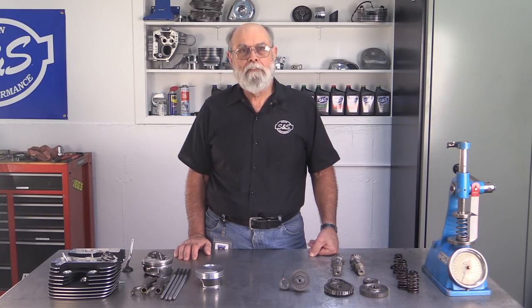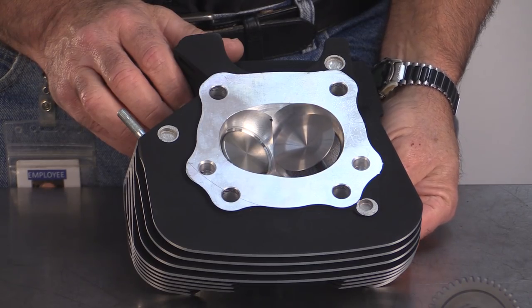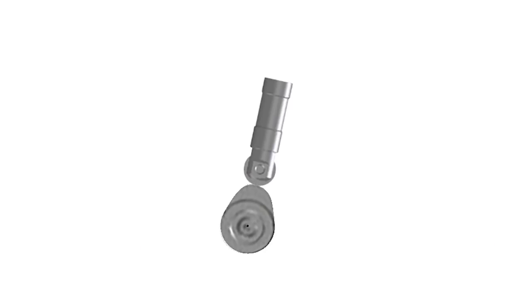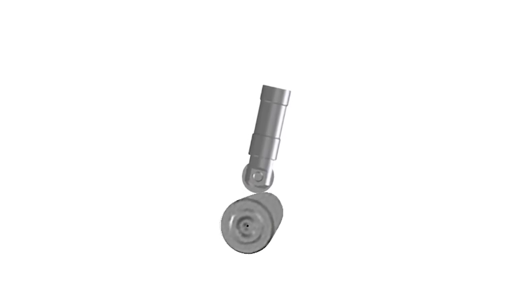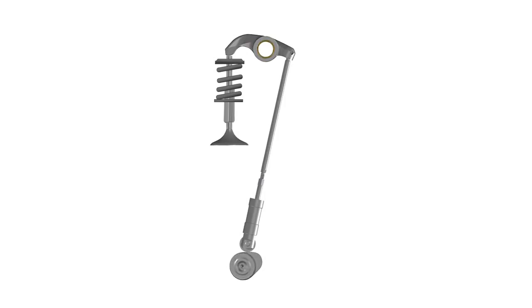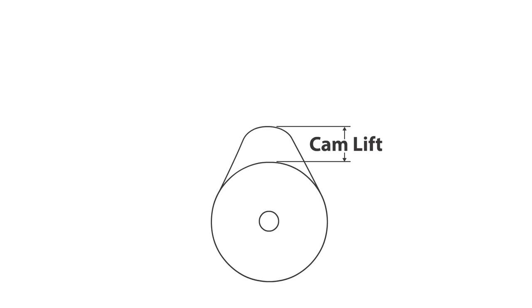Let's look at the first of the big three: lift. Lift is defined as how far the valve moves off the valve seat — in other words, how far the valve opens. As the camshaft turns, the lobe pushes the tappet up; the tappet moves the push rod upward, which moves the rocker arm, and the rocker arm opens the valve. The distance that the cam moves the tappet and push rod is known as cam lift or tappet lift — it's the difference between the radius of the base circle and the distance from the centerline of the camshaft to the nose of the cam lobe.